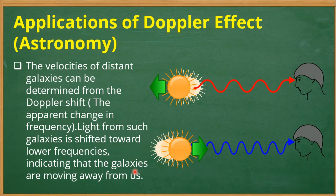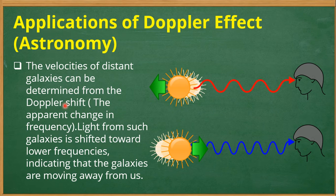Another application of the Doppler effect is in astronomy. Here we deal with light waves. The velocities of distant galaxies can be determined from the Doppler shift — the apparent change in frequency. There are two types of Doppler shift: red shift and blue shift, depending on whether the galaxy is moving away from or toward the Earth.